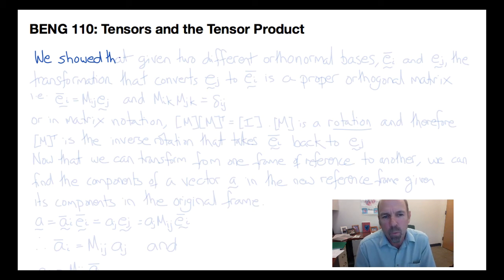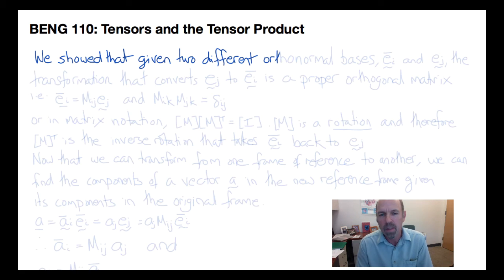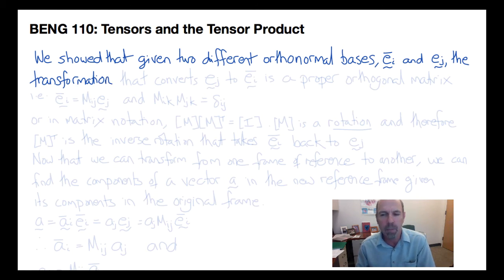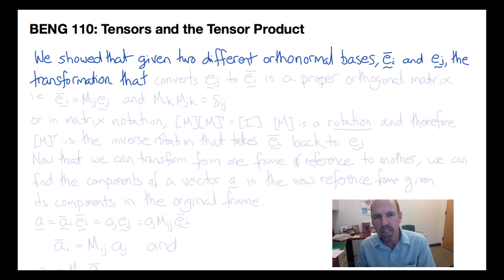Welcome back. Last time, we considered that a vector is a physical quantity so that if two different observers are looking at that vector using different frames of reference, then the difference between the components that they measure for that vector must be obtainable if you know the difference between the frames of reference. Specifically, if we find the transformation that converts EJ to EI_bar, we should be able to convert the components of the vector as seen by one observer to the other.